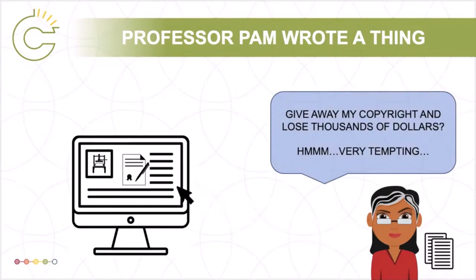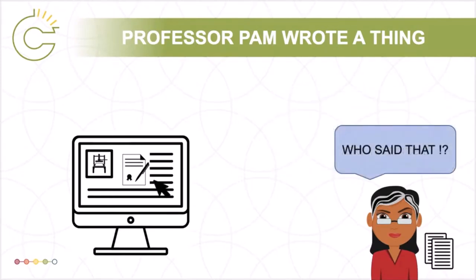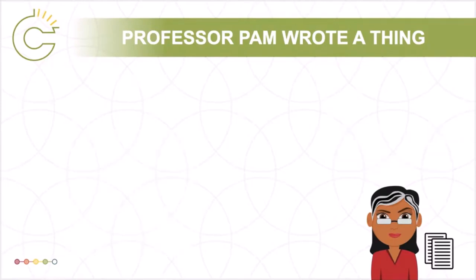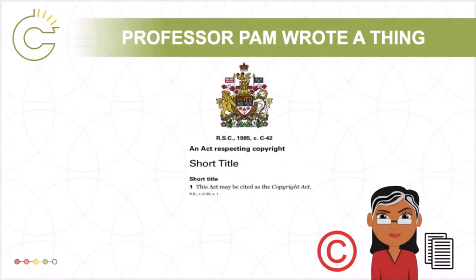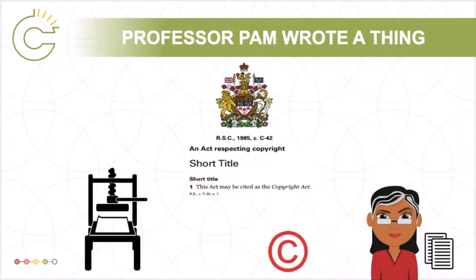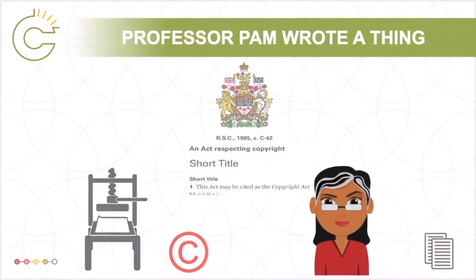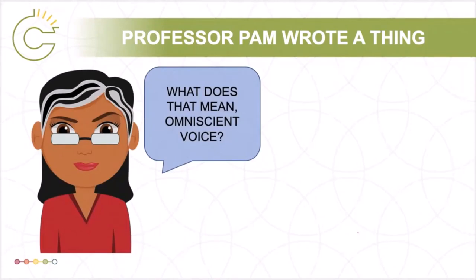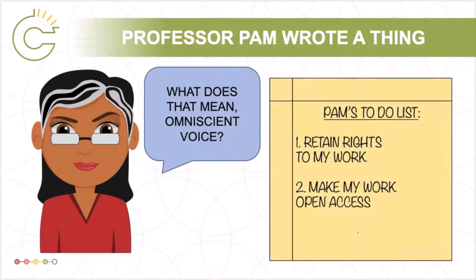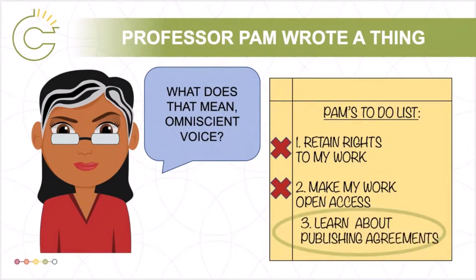Stop! Pam, don't click! As the author of the work, and under the terms of her employment contract with her university, Pam holds copyright in the article she wrote. The Copyright Act gives her the sole right to publish her work when and how she chooses, unless and until she transfers this right. If Pam transfers her copyright to the publisher without retaining any rights for herself, she will be left with the same limited rights provided to any other user of a copyright-protected work. That is, she will have to rely on Copyright Act exceptions in order to use her own work without infringing copyright, and she won't be able to comply with a funding agency's requirement to make the work open access, which might make it difficult to receive future funding from that funding agency.